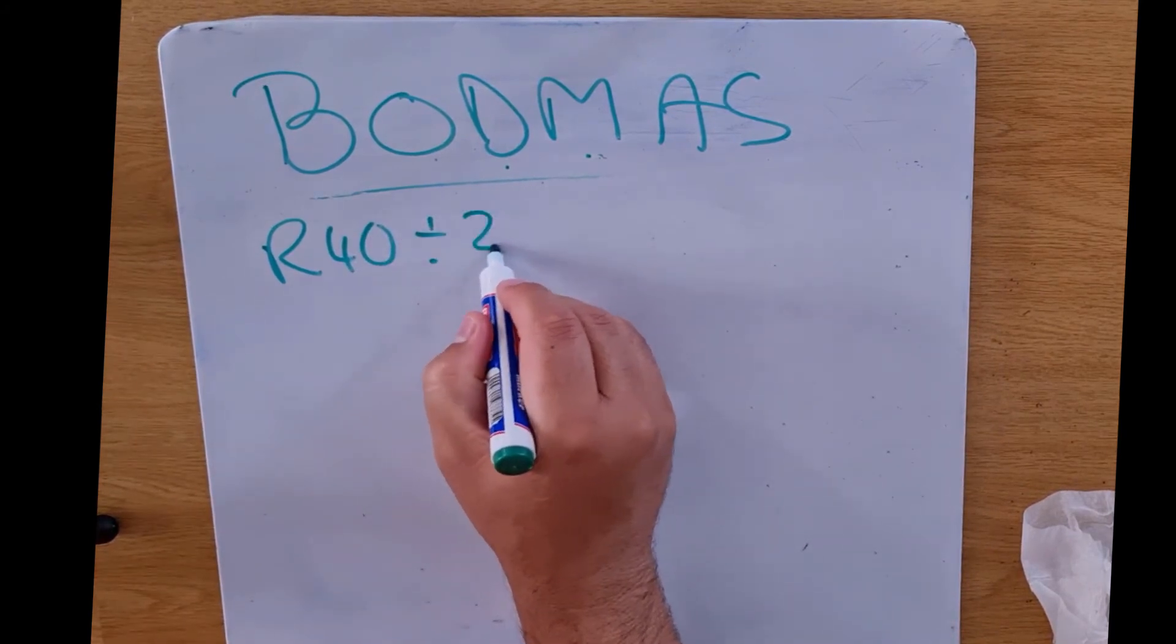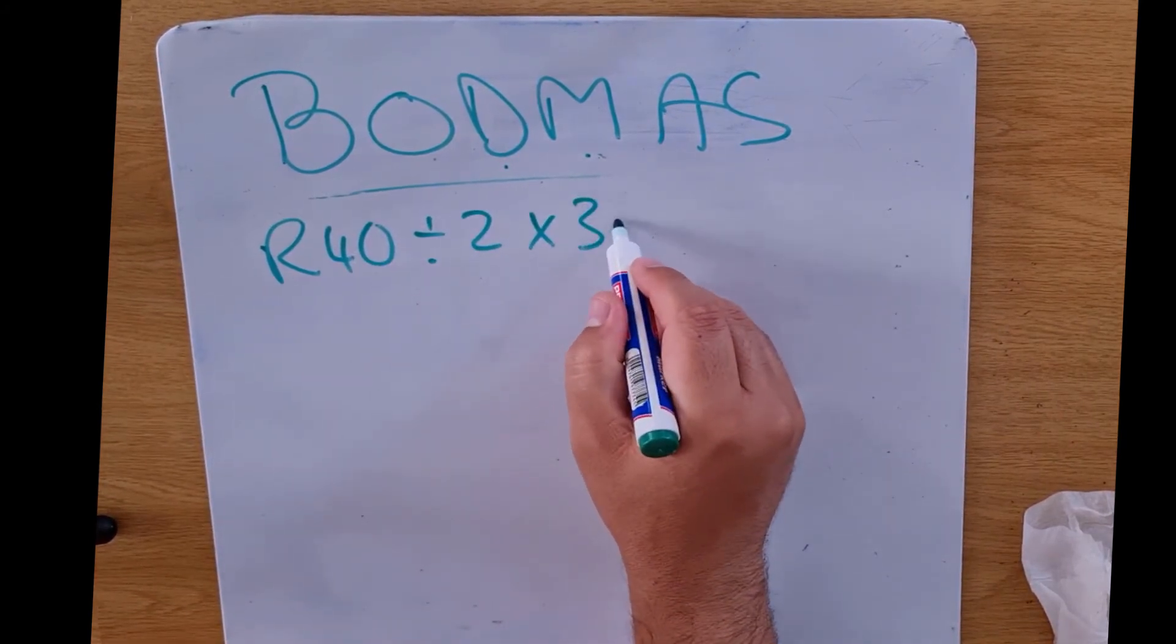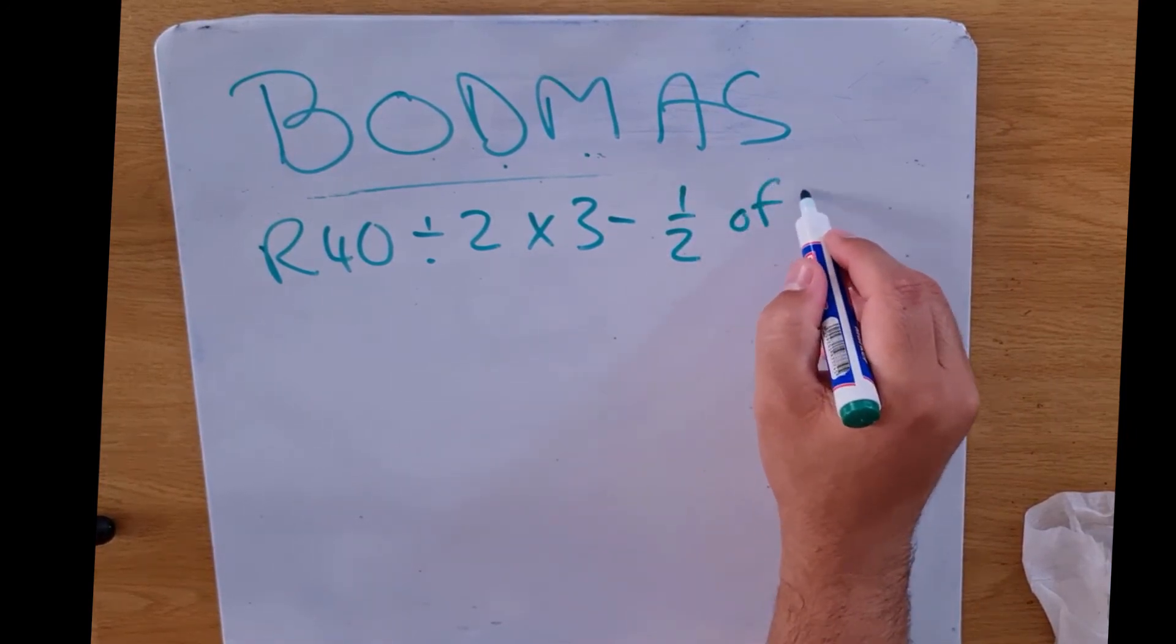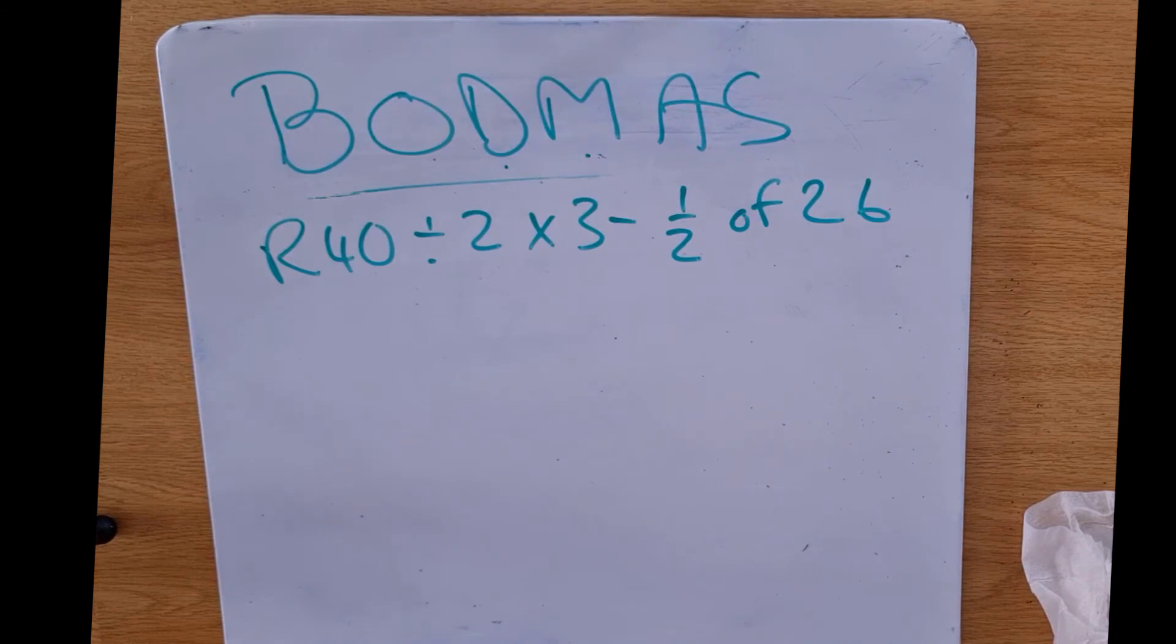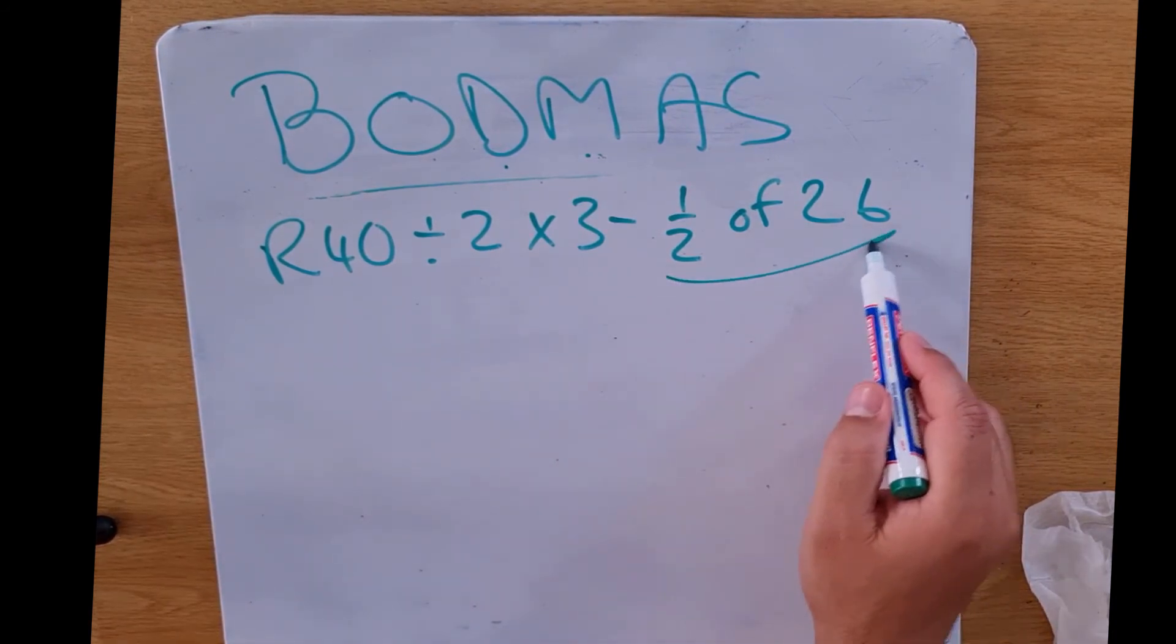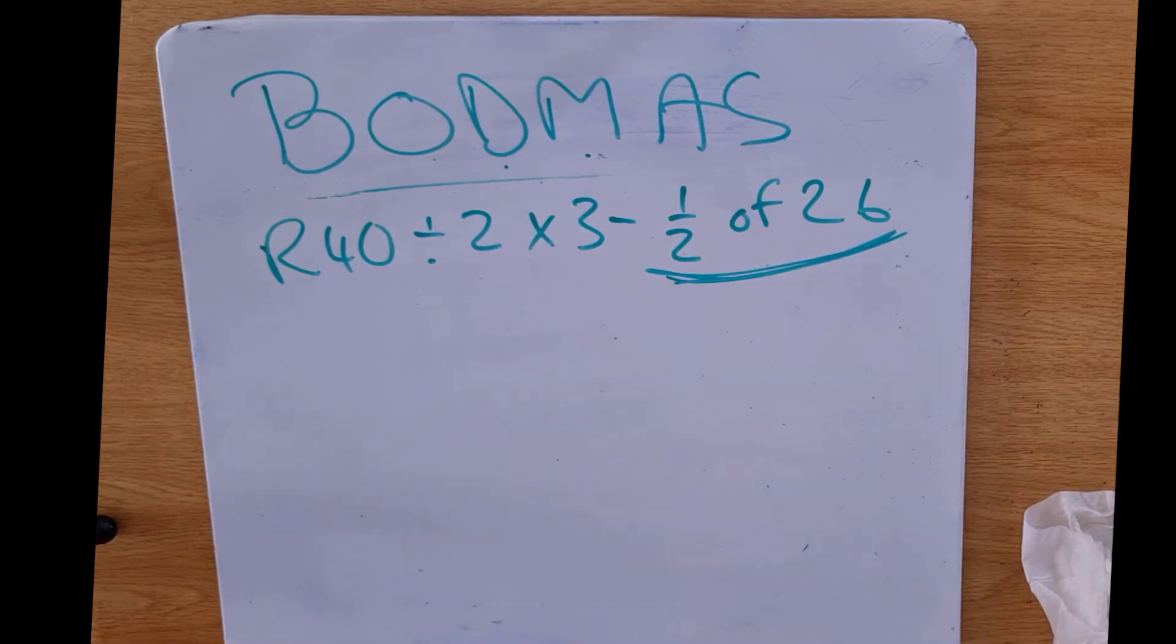40 rand divided by 2 multiplied by 3 minus a half of 26. Immediately our eye sort of goes to this part over here, half of 26.